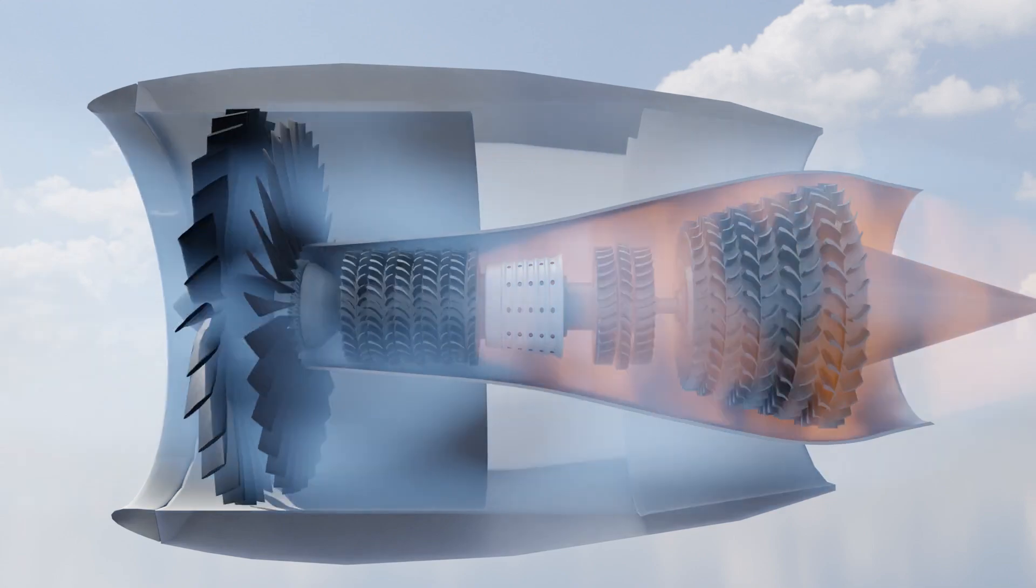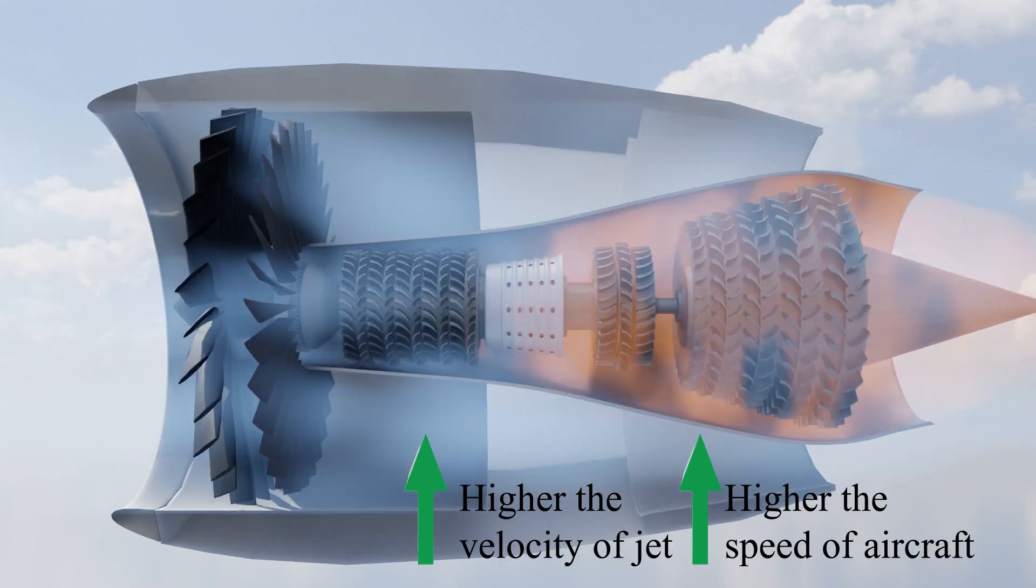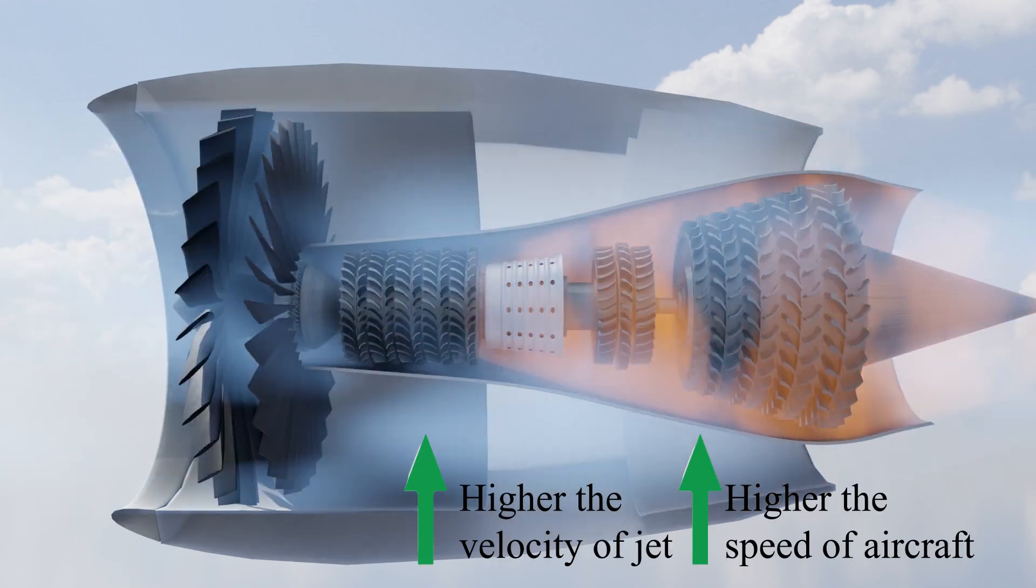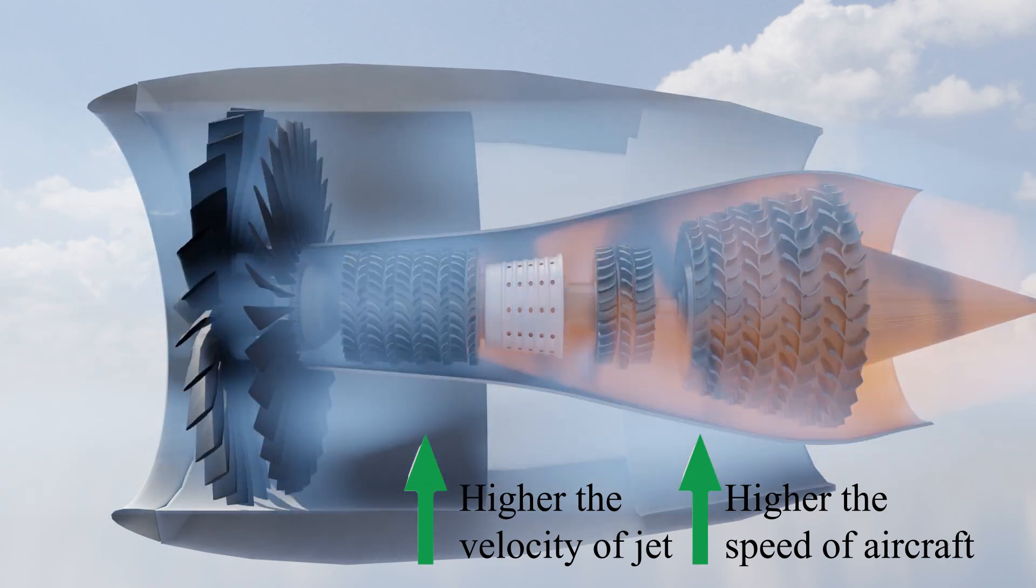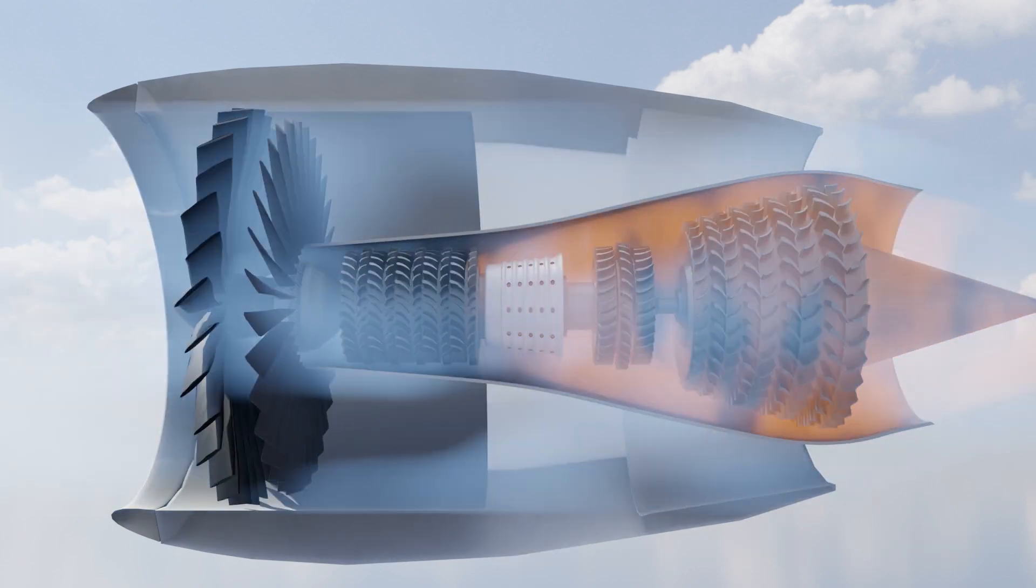So we can say that the higher the velocity of the outcoming jet, higher the thrust and higher the speed of the aircraft. But let's dive into how high-speed jet is produced in the jet engine.